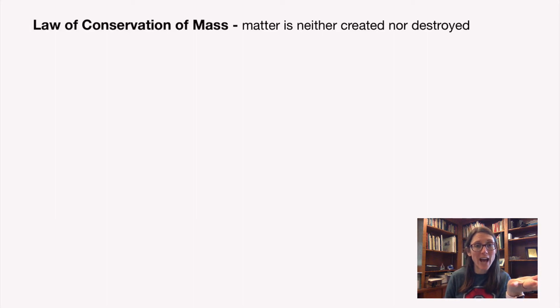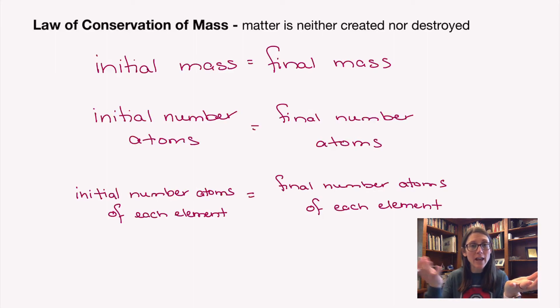So the mass at the beginning of your chemical reaction and the mass at the end will be the same. The total number of atoms has to be the same at the beginning and at the end because you're not creating or destroying atoms. And the number of each type of element at the beginning and at the end will be the same.